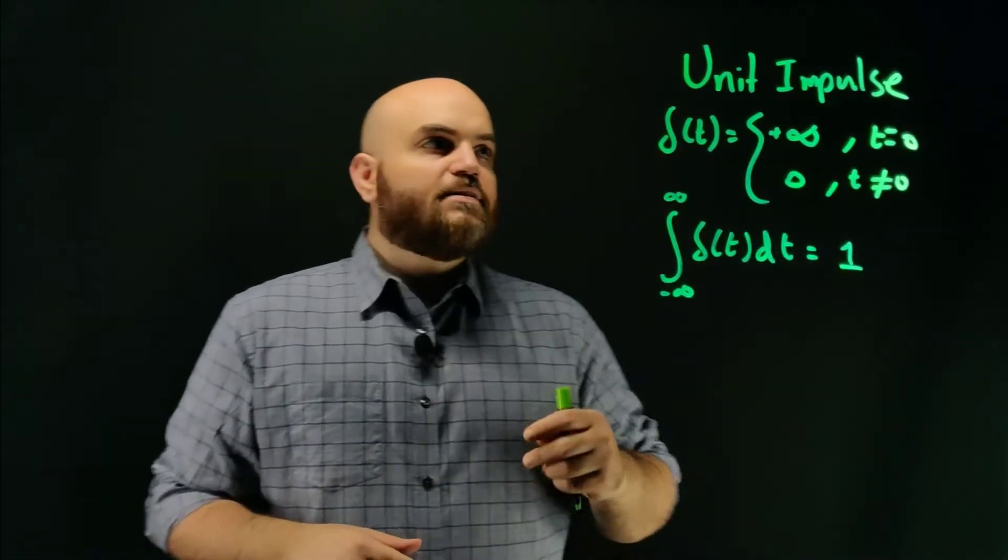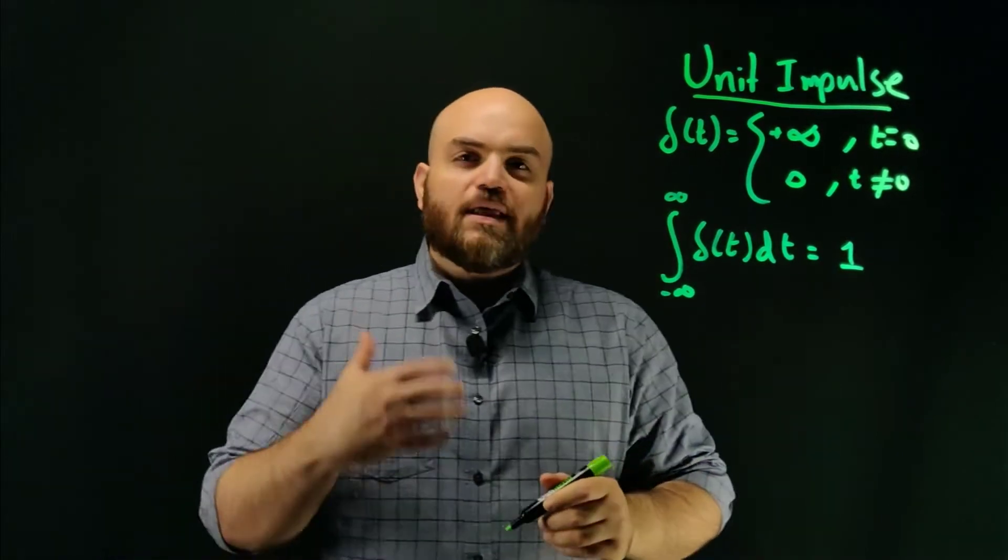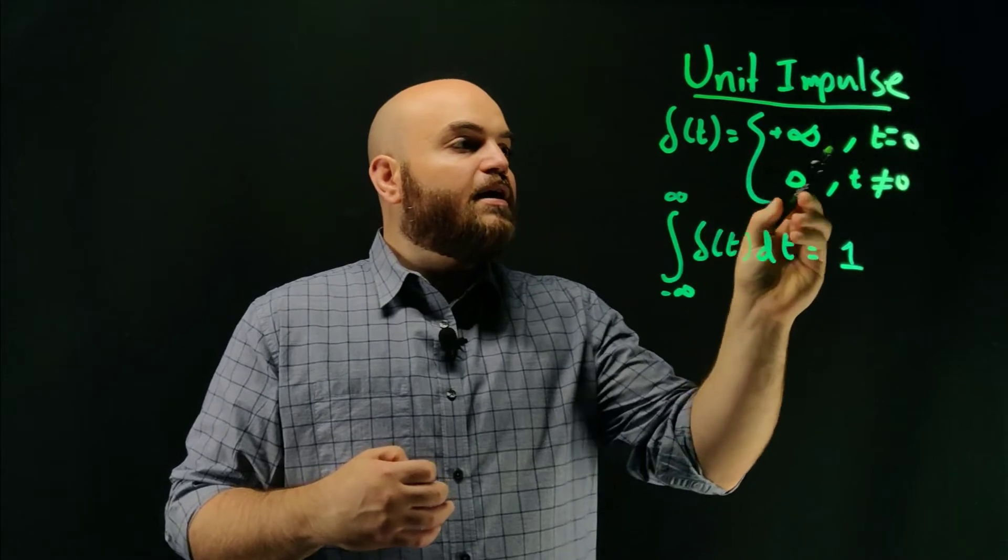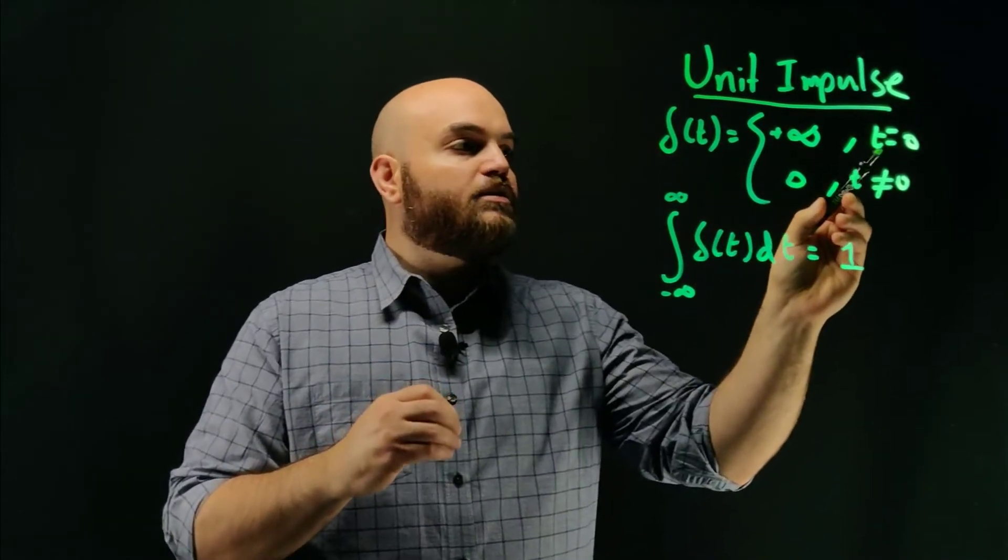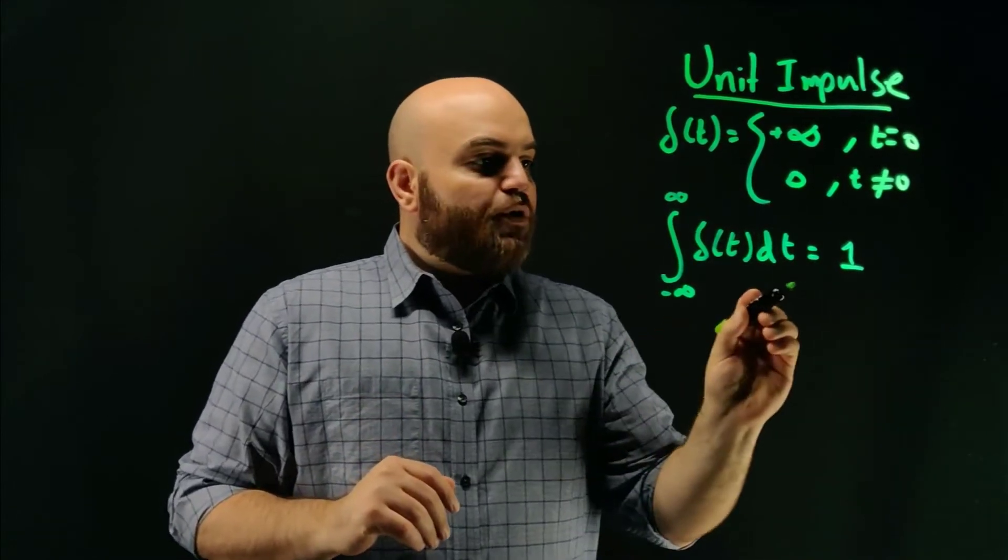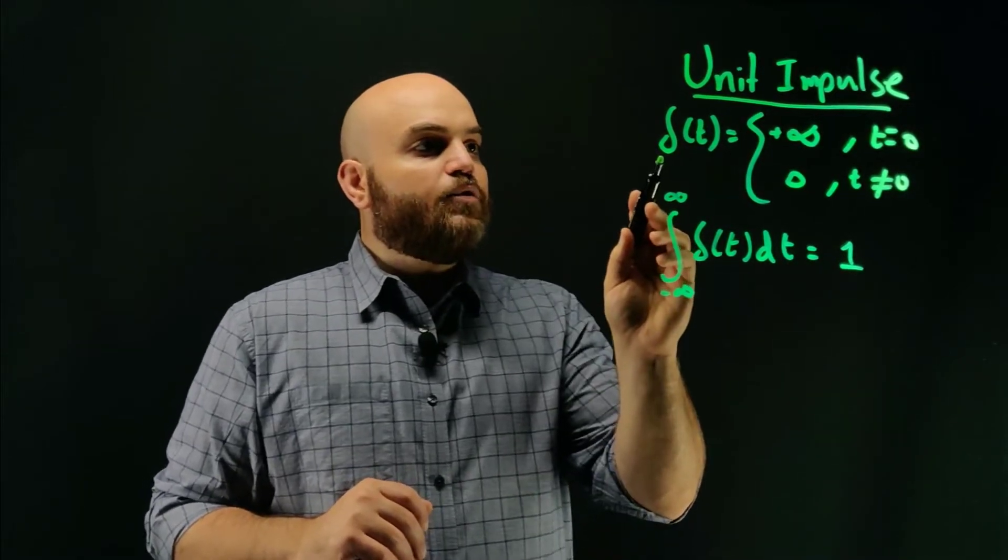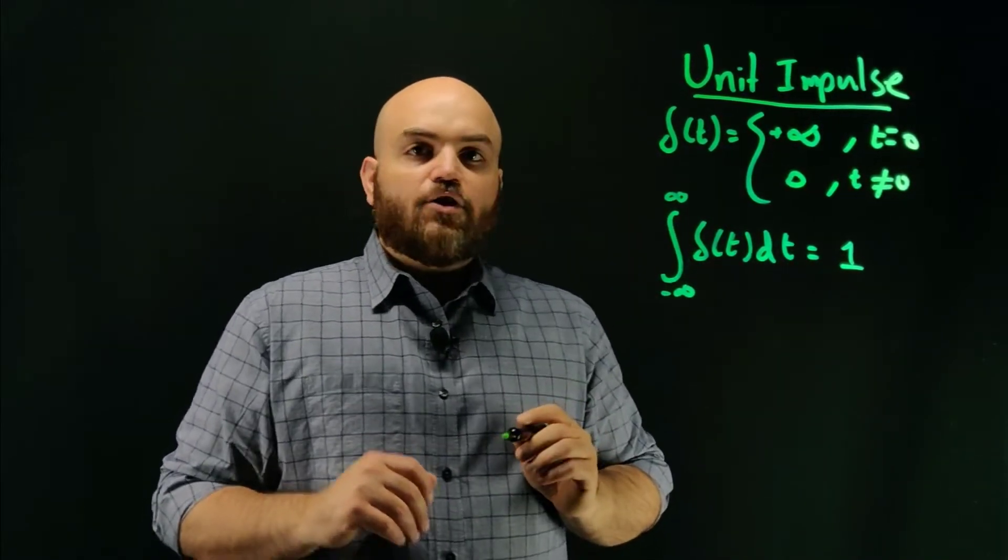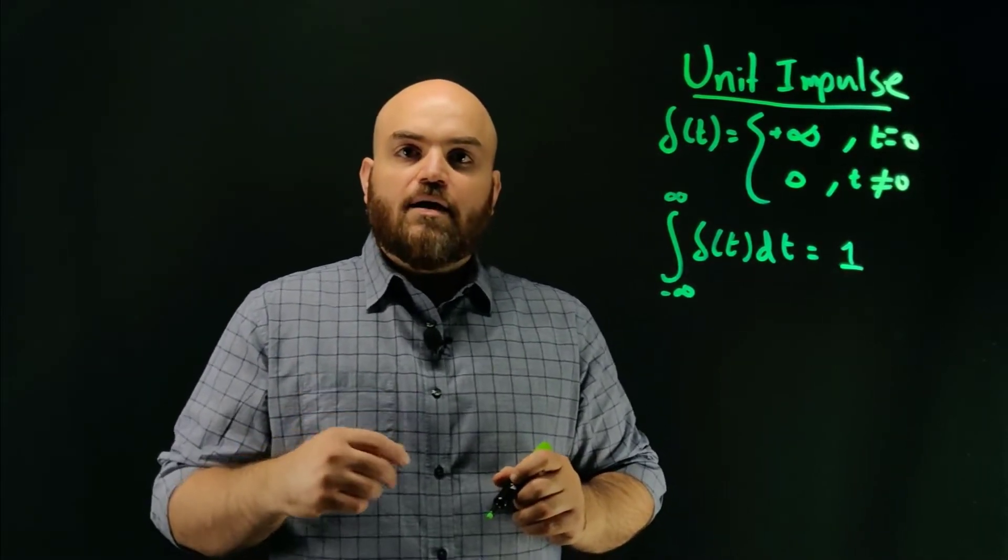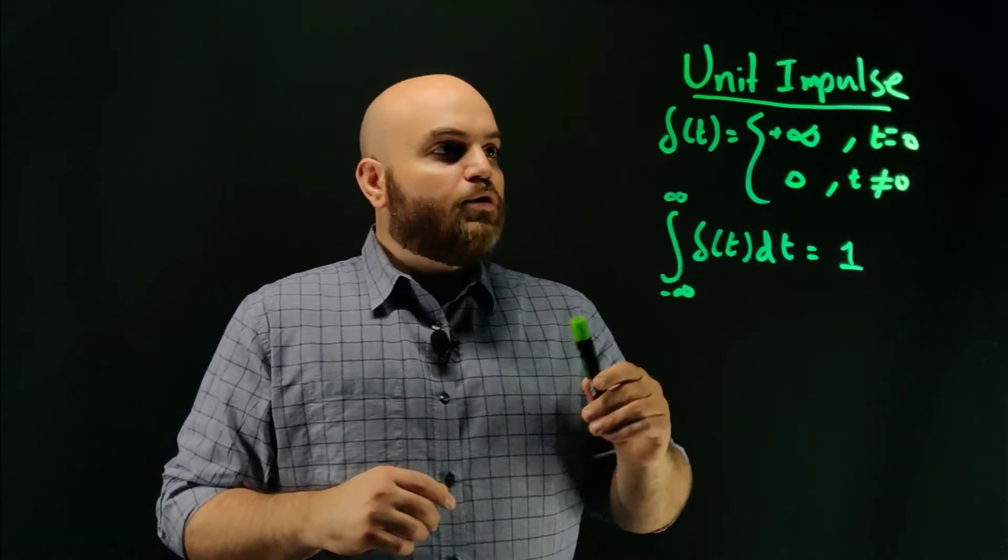In this next example, let's consider the unit impulse function. And the unit impulse function is really a special function that is essentially defined in a way that it is infinite or undefined at time equals zero, and it's zero everywhere else. And it has this property where the integral of the function itself is equal to one. And you can see here, I'm using the Greek letter delta to represent a unit impulse.